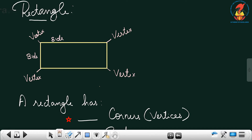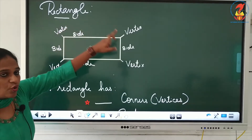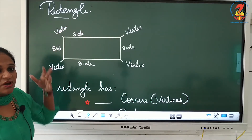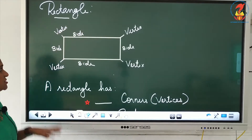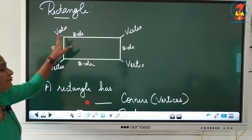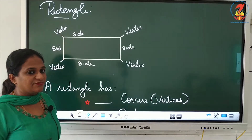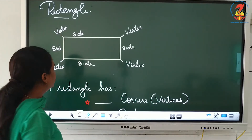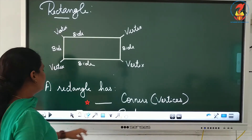A rectangle has four sides and four vertices or corners. So you have four vertices or corners and four sides for a rectangle.